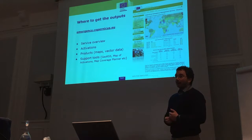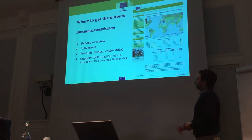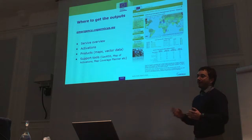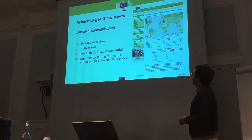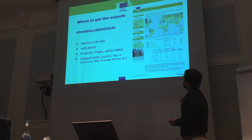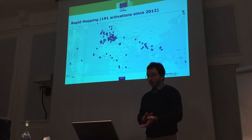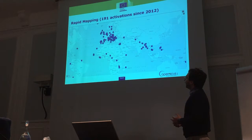Where can anyone get the products? We have a website, emergency.copernicus.eu, where there is information about all activations, including past ones. You can get products in two versions: the maps as PDF and JPEG, but also the raw data — you have access to zip files of all the vector shapefiles created during the task. There are support tools; you can subscribe to GeoRSS and see the map of activations. Most activations are in Europe, but not all of them.